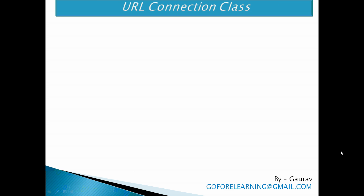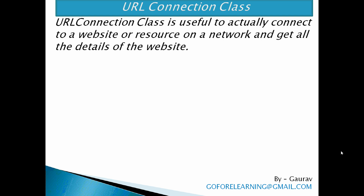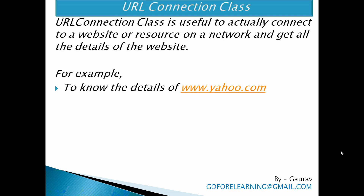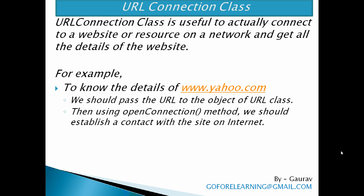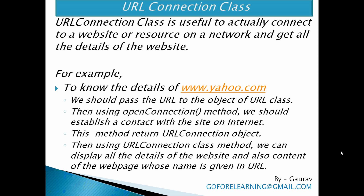URLConnection class is useful to actually connect to a website or resources on a network and get all the details of the website. For example, to know the details of www.yahoo.com, we should pass the URL to an object of the URL class. Then using the openConnection() method, we establish contact with the site on the internet — this method returns a URLConnection object. Then using URLConnection class methods, we can display all the details of the website and also the content of the webpage whose name is given in the URL.